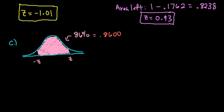This one we have to think about a little bit more because of the fact that we are looking for the area between negative z and z. Since it's between, that tells us that this area to the right of positive z is going to be equal to the area to the left of negative z. So these two areas are going to be equal.